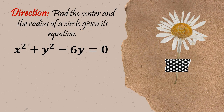For our next problem, the given equation is in general form. How are we going to find the center and length of radius? My tip is: your target is to make it into center-radius form. In our first and second problems, it was in center-radius form and we were able to get h, k, and r easily. So we need to convert this into center-radius form, and we are going to use the completing the square method.